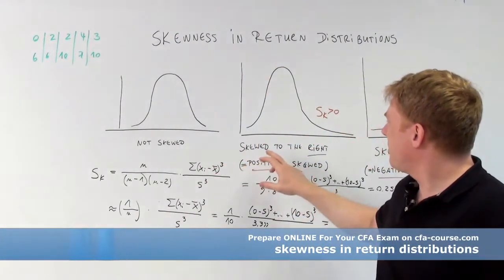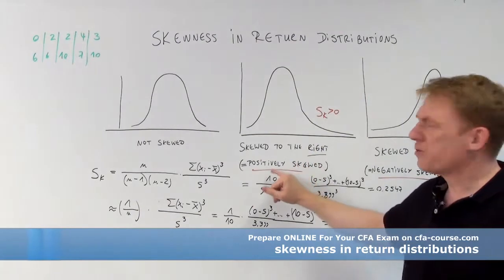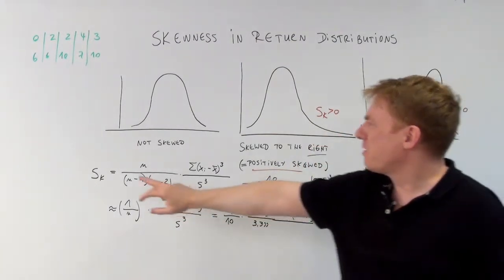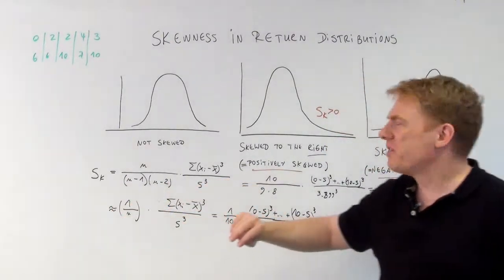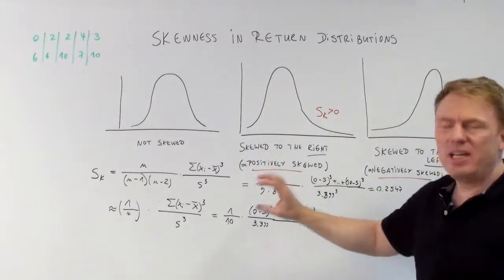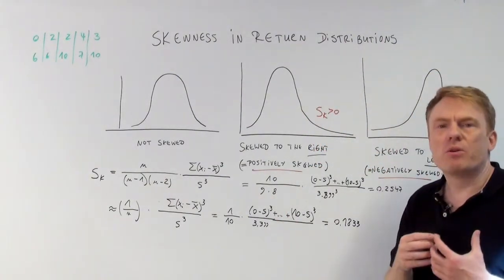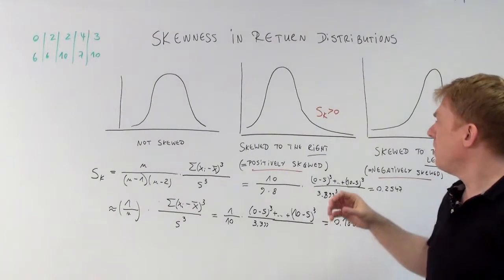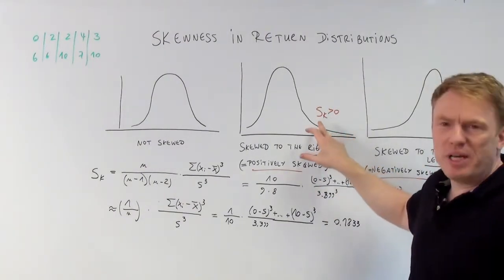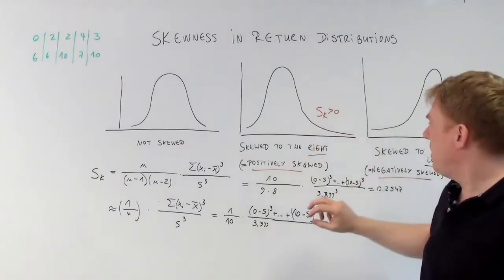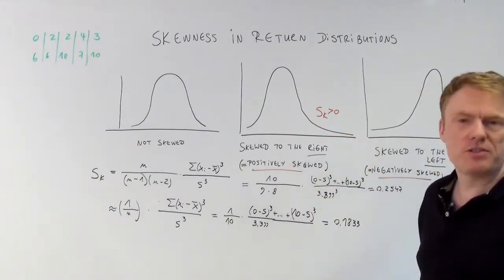We can see here skewed to the right is called positively skewed. The number we can compute, s sub k, is an index that signifies if there is skewness or not. If s sub k is strictly superior to 0, it is called a positively skewed distribution.